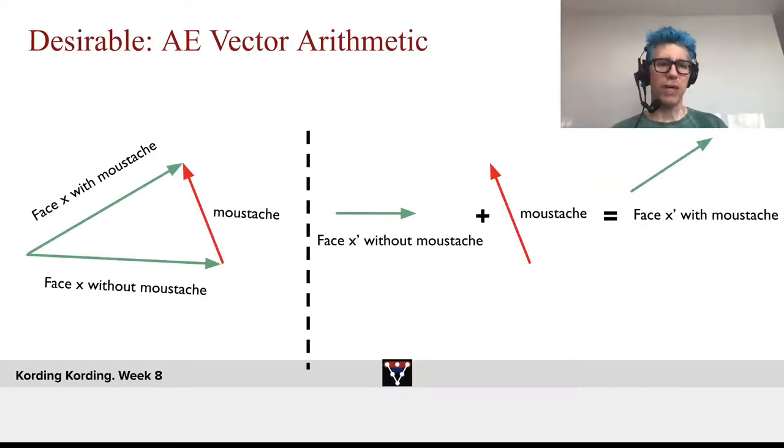If it did, what would we expect? Then, we could say we might have a face with a mustache and a face without a mustache. And, arguably, the difference between those two images is the mustache.